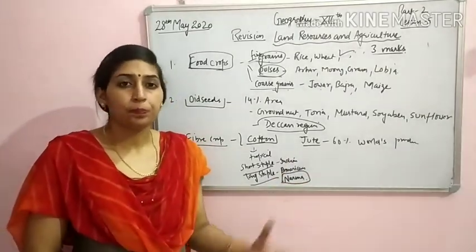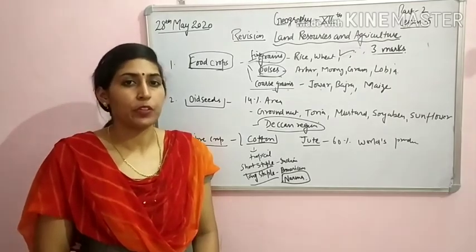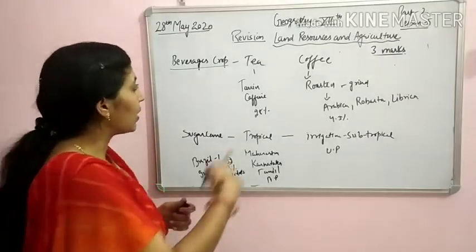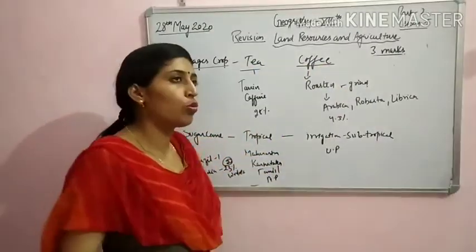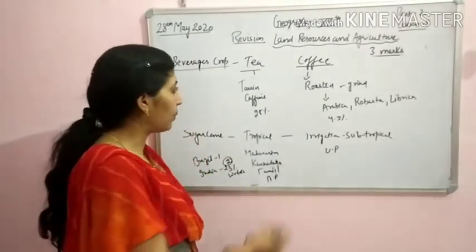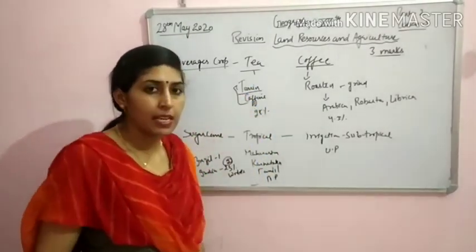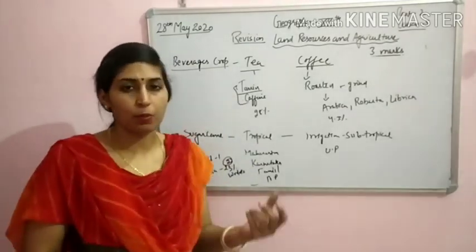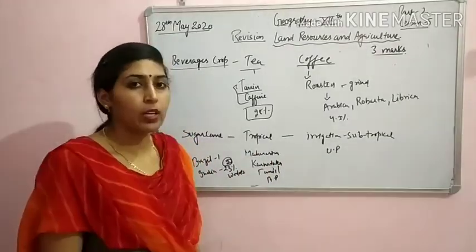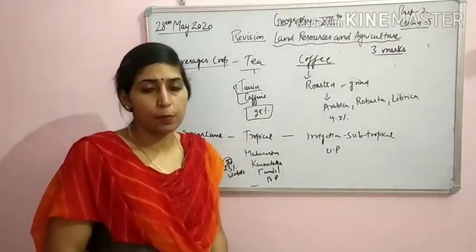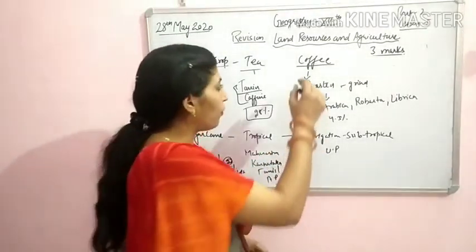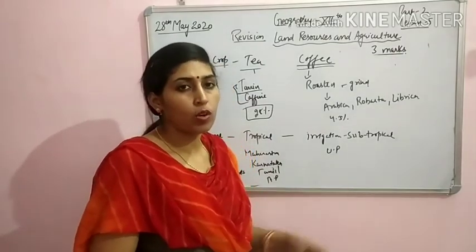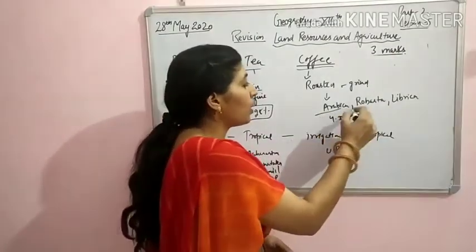Government policies were adopted to ban poly bags so that jute bags would be used more. If farmers grow jute, they get a lot of motivation. Next, beverages crop — tea and coffee are the two beverages crops produced in India. Tea contains tannin and caffeine. India has 28% of world tea production. Next is coffee — it is a beverages crop where seeds are roasted and ground. There are three main varieties: Arabica, Robusta, and Liberica. India has 4.3% of world coffee production, mainly in Nilgiri Hills in Karnataka.